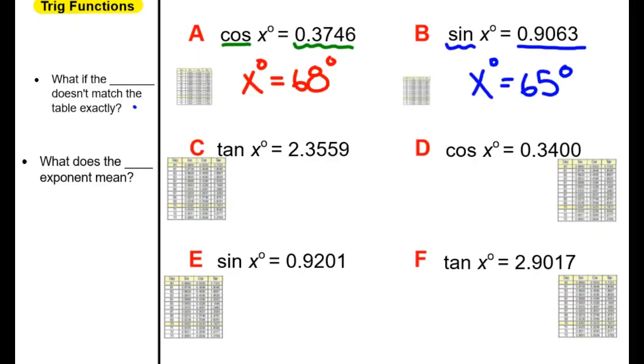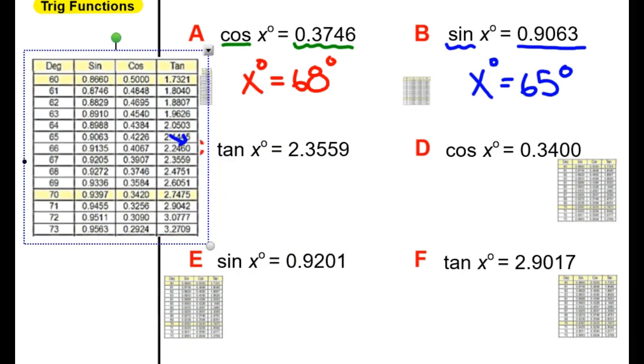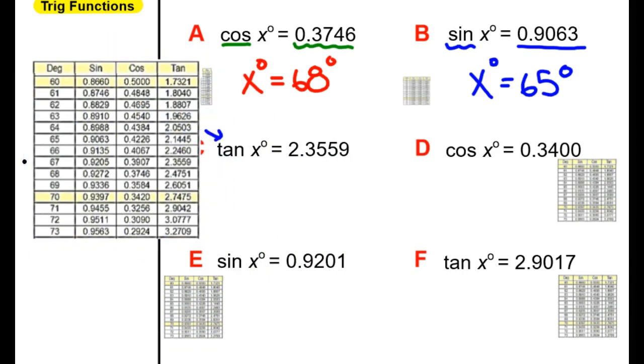All right, let's try it again with letter C this time. Again, I'm going to make my chart bigger so that we can see what's going on. You should be looking at your chart, and we are going to now look in the tangent column for 2.3559. So we're now in the tangent column. I read down until I get close to that, and right here it is, 2.3559. So I read over, and there I have 67 degrees.